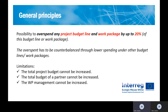This rule basically allows projects to overspend any approved project budget line and work package by up to 20%. So you can go on any budget line or work package level to up to 120% of your initially approved budget. The right to overspend has to be counterbalanced by lower spending on other budget lines or work packages, but it still gives you quite a lot of flexibility in implementing your project vis-à-vis the originally planned budget.